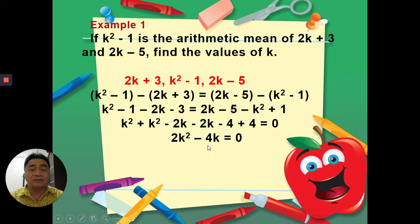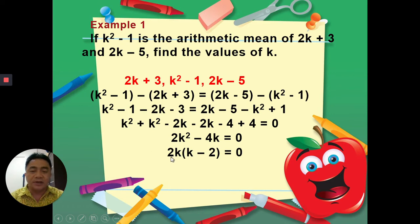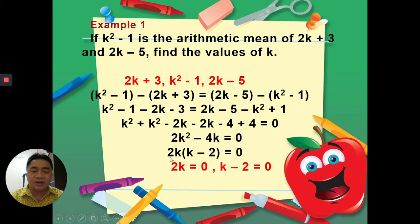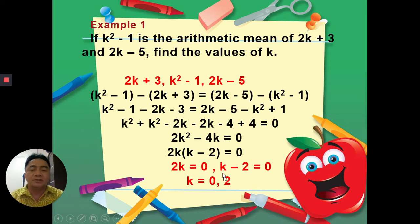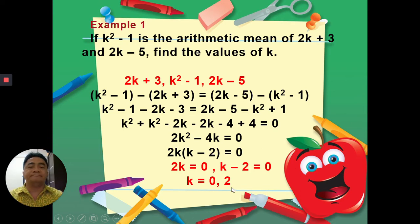We factor out 2k: 2k(k − 2) = 0. Setting each factor equal to zero: 2k = 0 gives k = 0, and k − 2 = 0 gives k = 2. Therefore, the values of k for this arithmetic mean problem are 0 and 2.